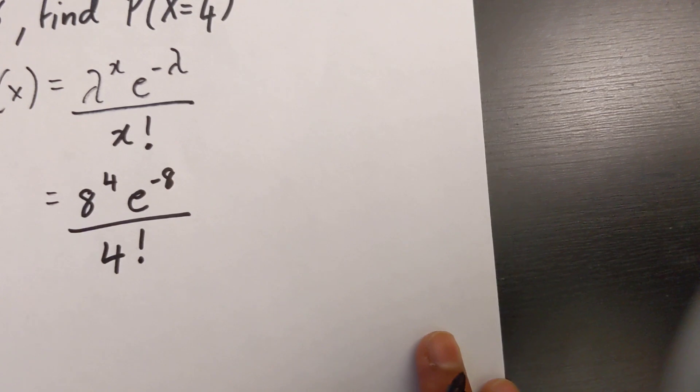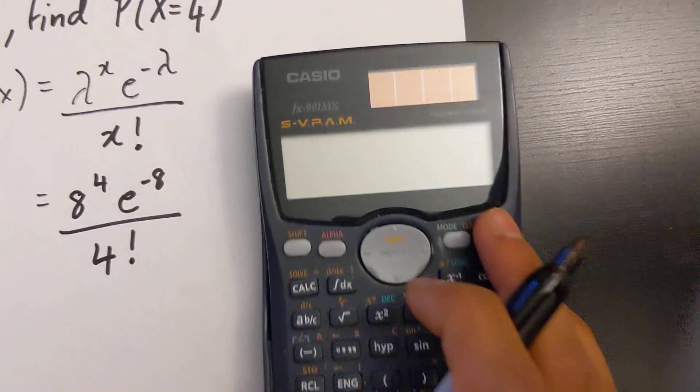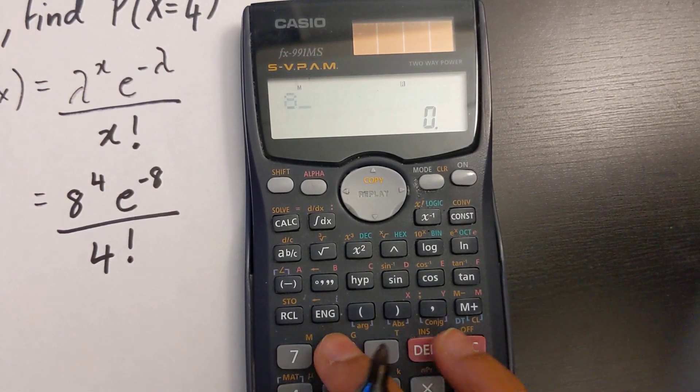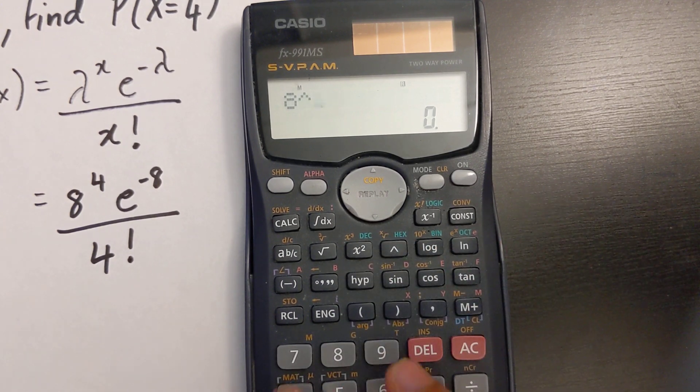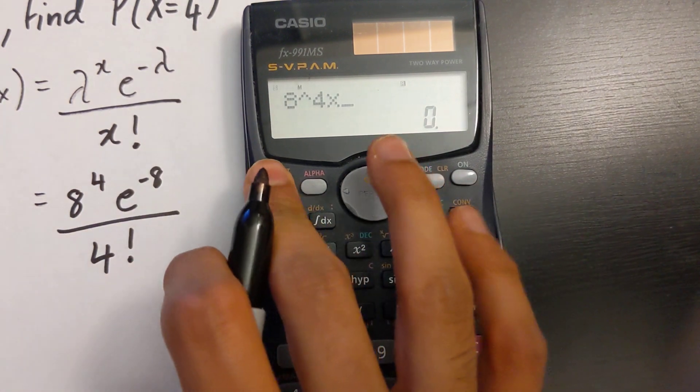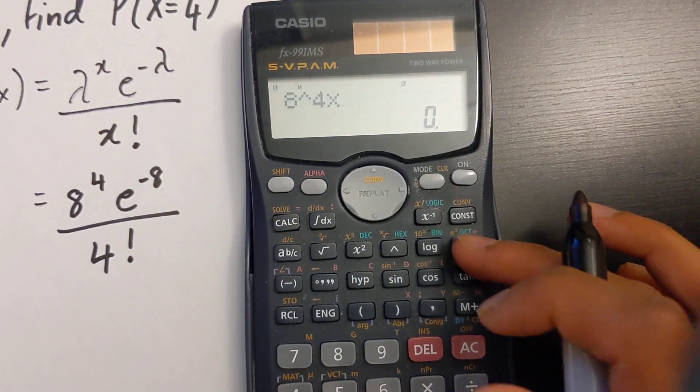And then I'm going to type this into my scientific calculator and get my solution. So I have 8 exponent 4 multiplied by, for the e button I'm going to hit shift and the ln button.